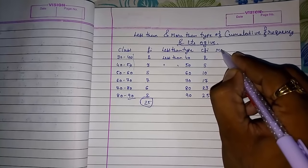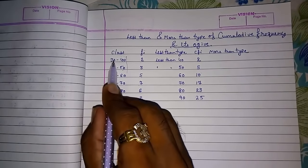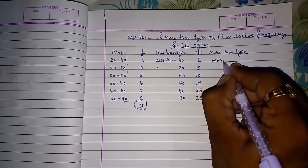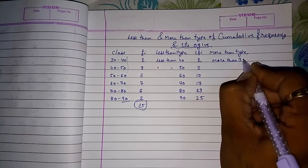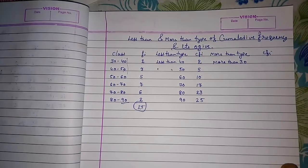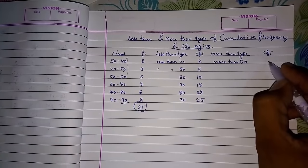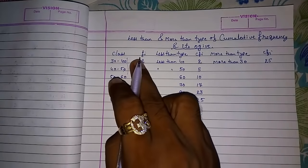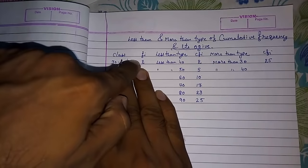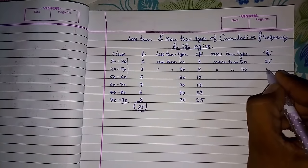Now I am going to tell you about more than type. In more than type, we have to start from the first line. More than 30 means all numbers are more than 30, so the frequency will be the total sum, which is 25. Now we have to subtract. If I say more than 40, only the first class is excluded, so we subtract 2 from 25: 25 minus 2 equals 23.